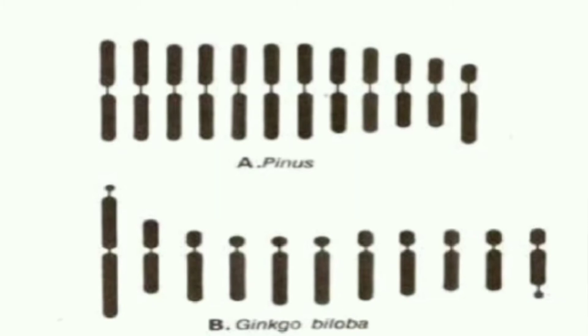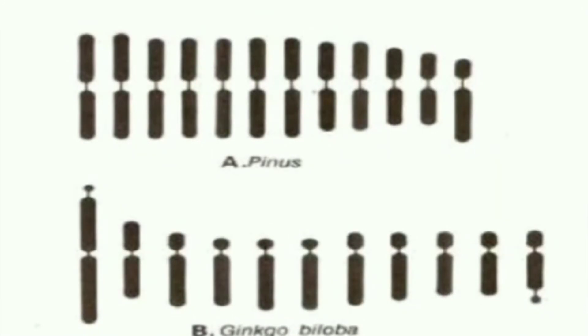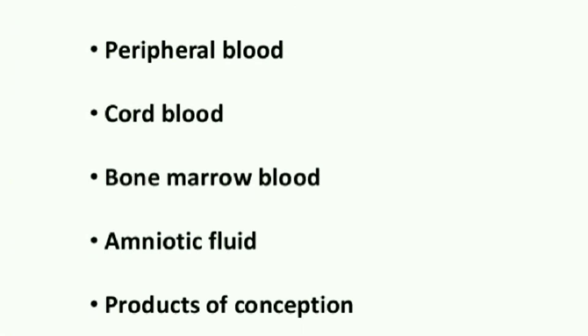Another difference between symmetric and asymmetric karyotypes is that in symmetric, the size difference between larger and smaller chromosomes is lesser, whereas in asymmetric, the size difference is more. In diagram A, chromosomes are metacentric and more or less similar in size, while in diagram B, chromosomes are acrocentric and show a clear larger-to-smaller size difference.